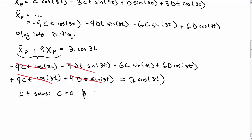It seems that C must be equal to 0, and 6D is 2, or D equals 1 third. So this tells me that the particular solution to this differential equation is just xp is 1 third t sine of 3t.